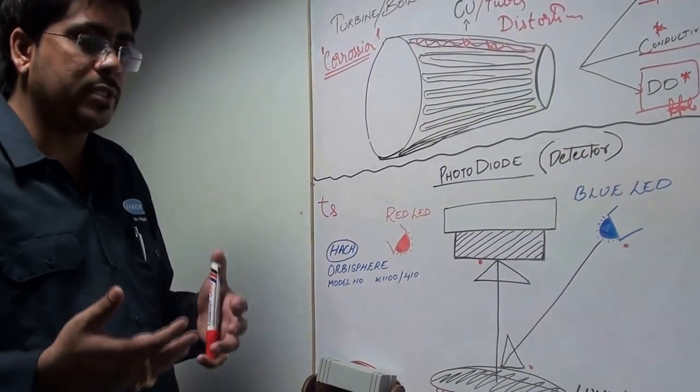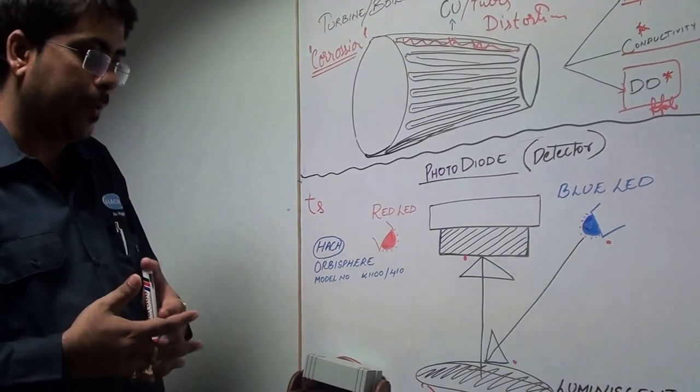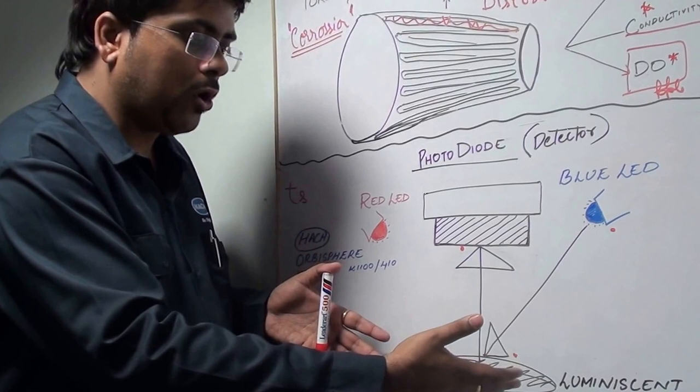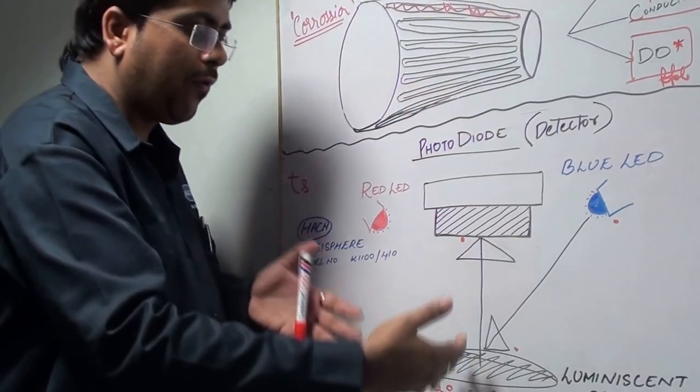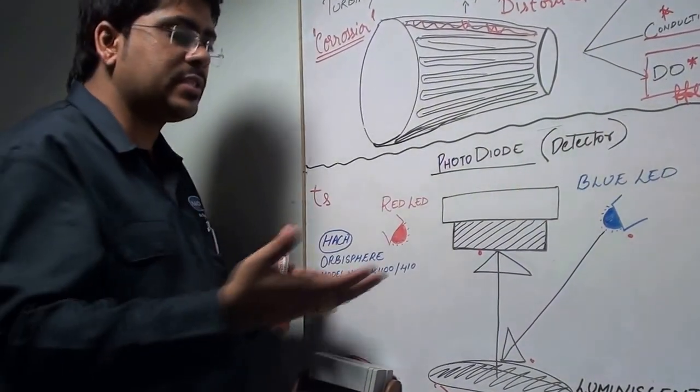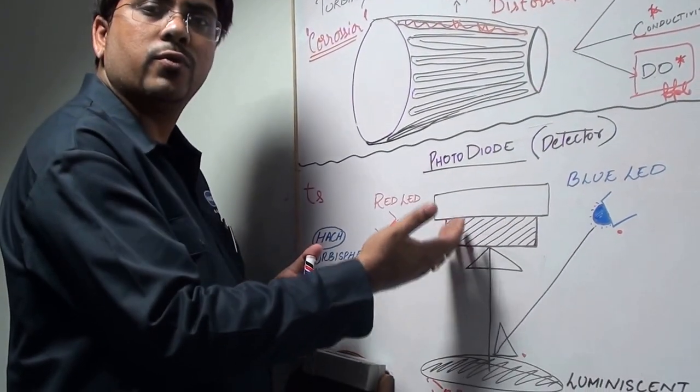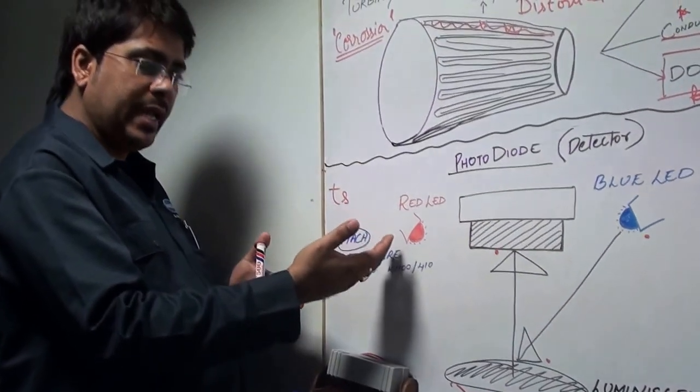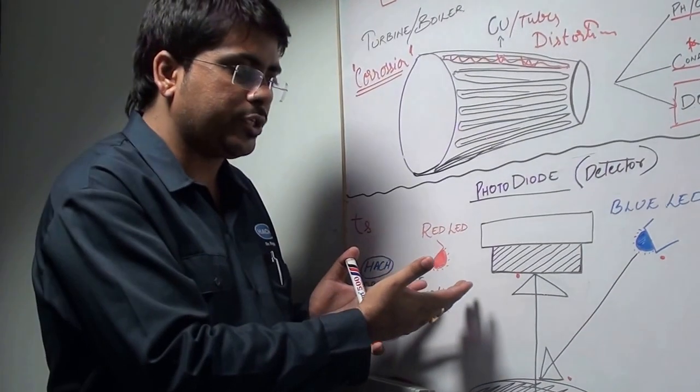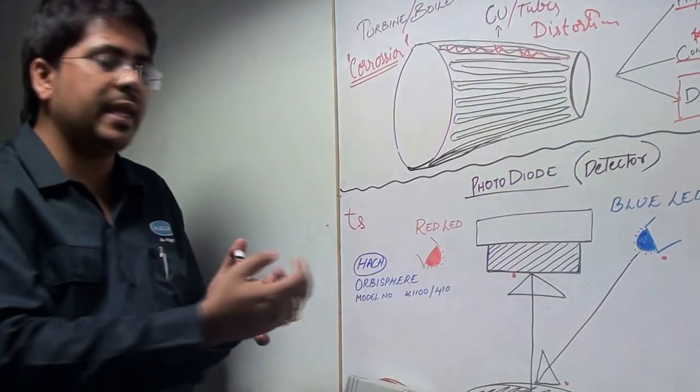The most important component is a black spot which is basically a luminescence spot. This works through the principle of luminescence. When blue LED light falls on the luminescence spot, it gets excited, emits radiation, and the radiation gets detected in the photodiode. The red LED consecutively does the referencing action.